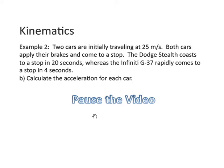Example 2. Two cars are initially traveling at 25 meters per second. Both cars apply their brakes and come to a stop. A Dodge Stealth coasts to a stop in 20 seconds, whereas a G37 rapidly comes to a stop in 4 seconds. Calculate the acceleration for each car. Go ahead, pause the video now, try this out.